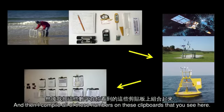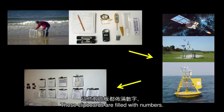And then I compile all of these numbers on these clipboards that you see here. These clipboards are filled with numbers. And from all of these numbers, I start with only two or three variables — that begins my translation process. My translation medium is a very simple basket. A basket is made up of horizontal and vertical elements. When I assign values to the horizontal and vertical elements, I can use the changes of those data points over time to create the form.